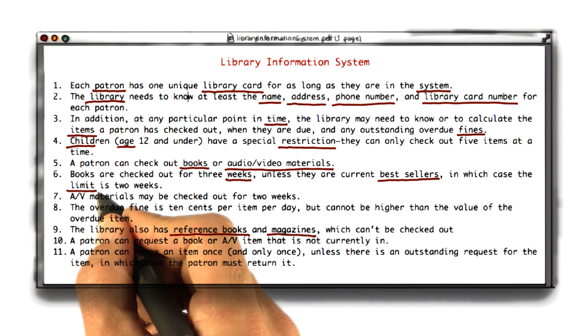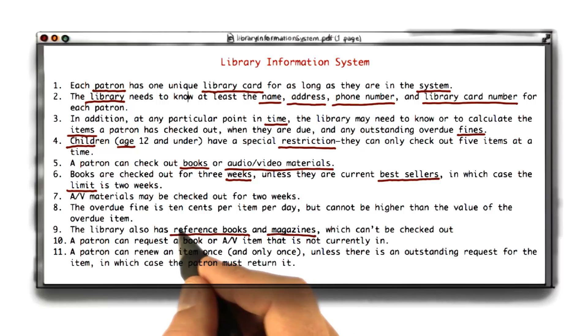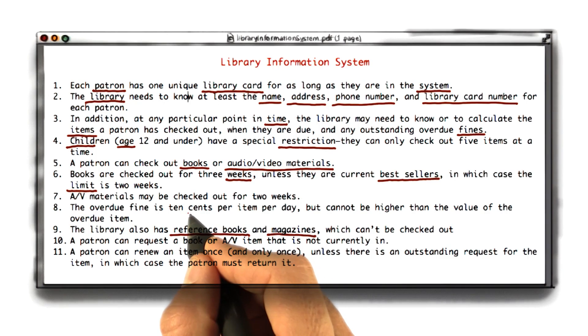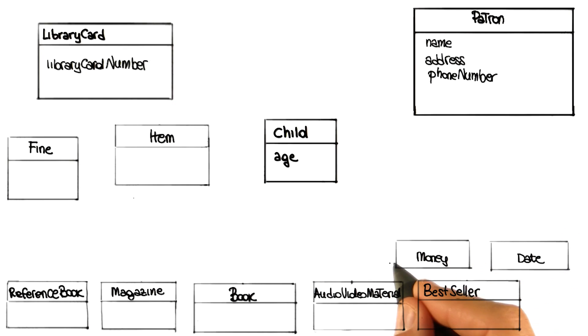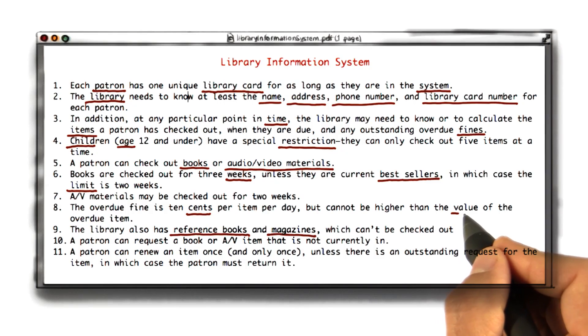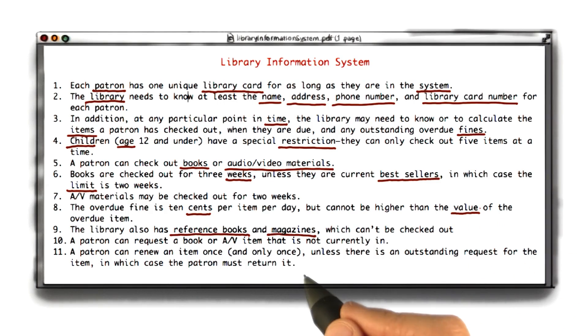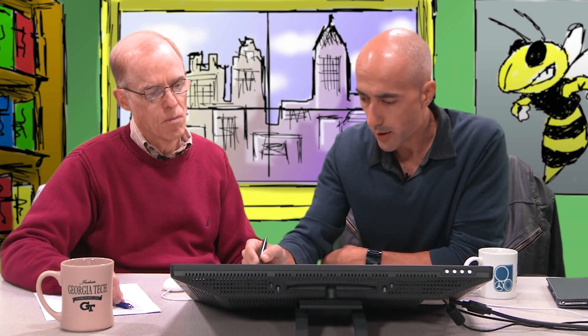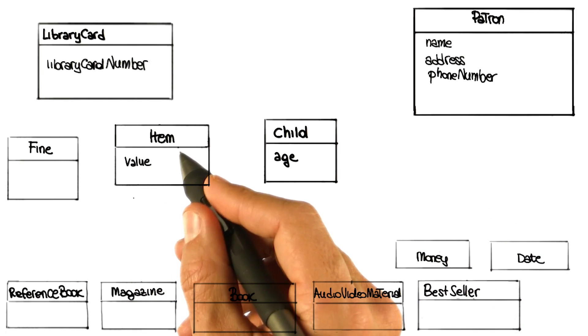The limit is also a time limit, so it can also be represented with the date class. Here we have cents — same consideration as I made for time. Money is a general concept that occurs in many IT systems, so I'm going to add a money class here as another utility class. And here I have value — let me look again at the requirement. It's the value of the item, so I'm going to put value in the item class as an attribute. That's how much it cost us.